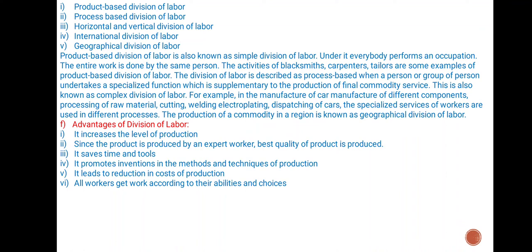The activities of blacksmiths, carpenters, and tailors are some examples of product-based division of labor. The division of labor is described as process-based when a person or group of persons undertakes a specialized function which is supplementary to the production of a final commodity or service. This is also known as complex division of labor. For example, in the manufacture of a car: manufacture of different components, processing of raw material, cutting, welding, electrocoating, dispatching of cars. The production of a commodity in a region is also known as geographical division of labor.